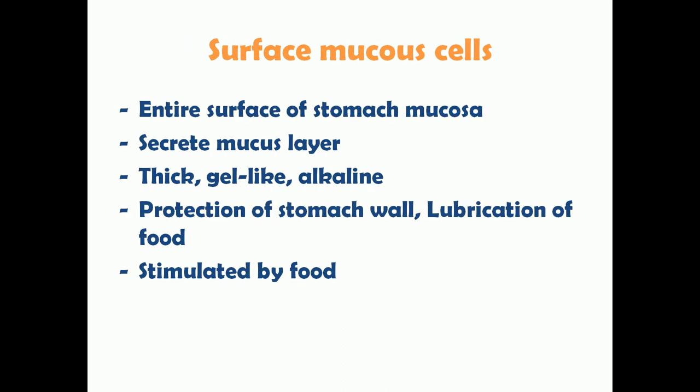In addition to these glands, there are surface mucus cells present throughout the entire surface of the stomach mucosa. Their main function is to secrete a thick, gel-like, alkaline mucus layer on the inner lining of the stomach, which protects the stomach wall from highly acidic gastric acid and also helps in lubrication of food. These cells are activated upon eating food.